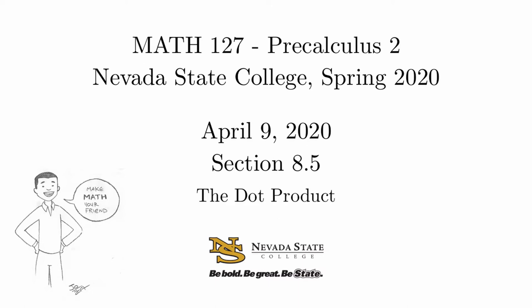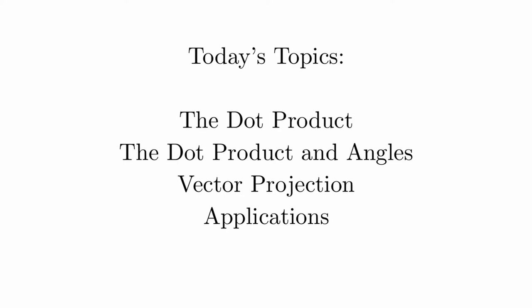So today we're going to talk about section 8.5, which is all about dot products. We're going to start off by just defining what a dot product is and showing how to calculate it in a couple different ways, talk about how it relates to angles, and then start talking about some very geometric perspective of what a dot product can do, which is known as a vector projection. And then of course we're going to close this off by doing a few more applications.